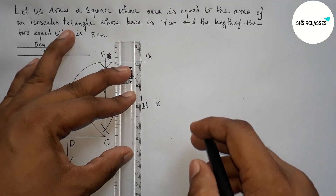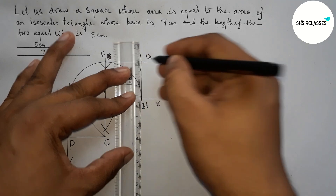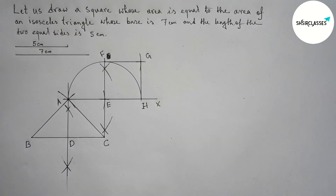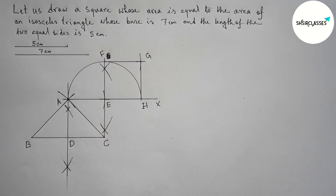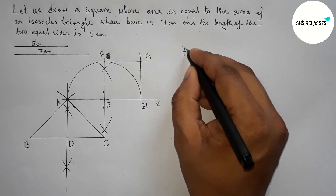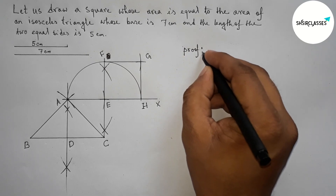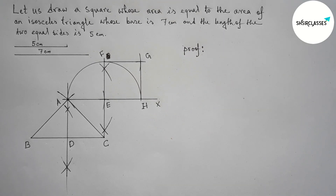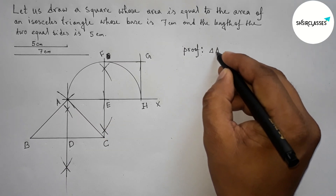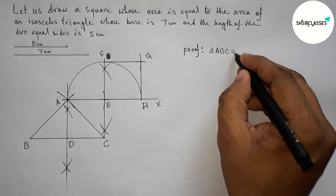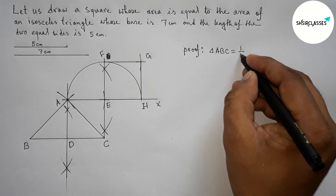Joining F to G, then joining G to H to complete our required square EFGH. The area of this square and the area of the triangle are both equal. Now I am going to prove this.